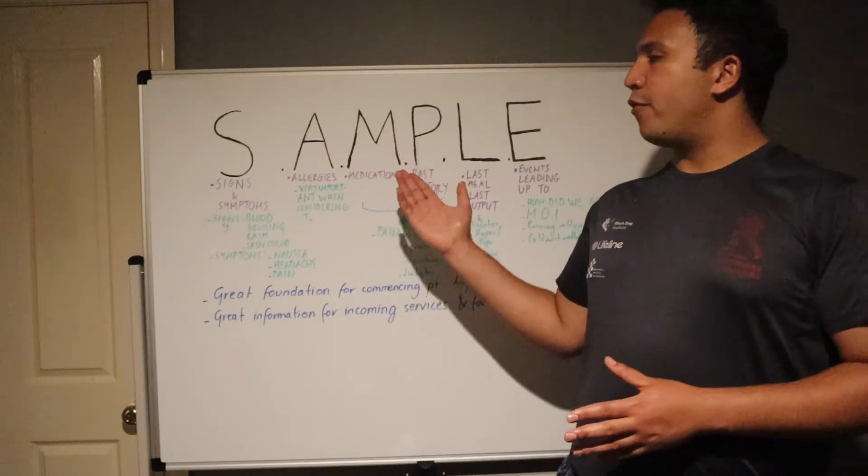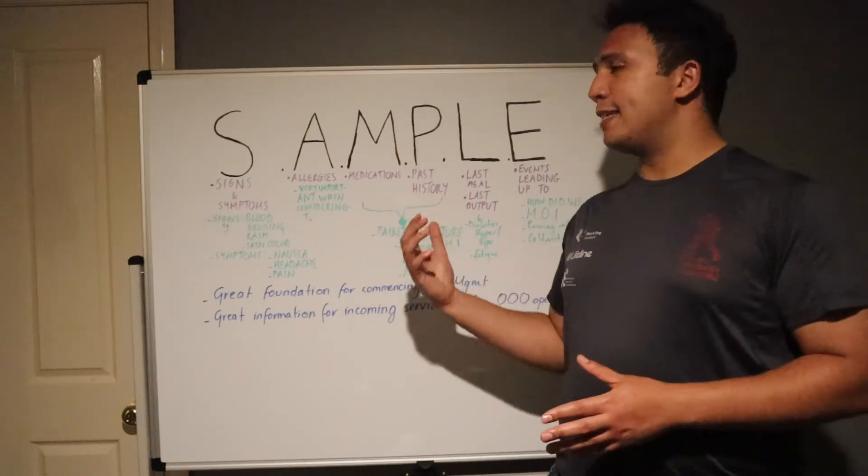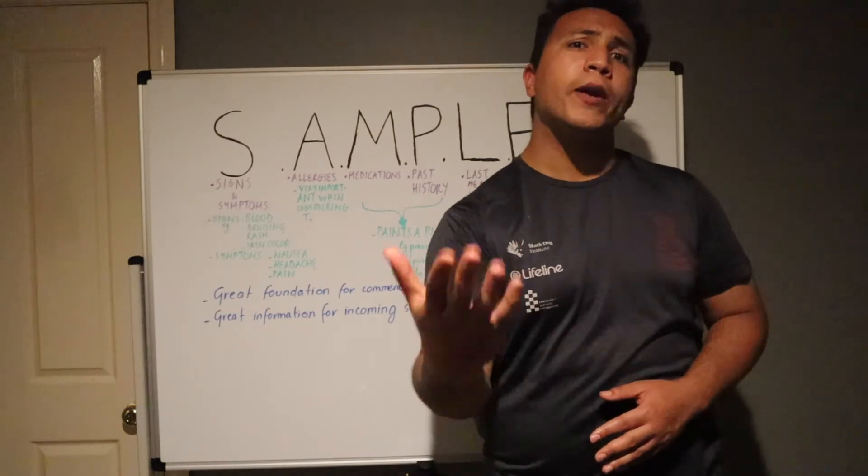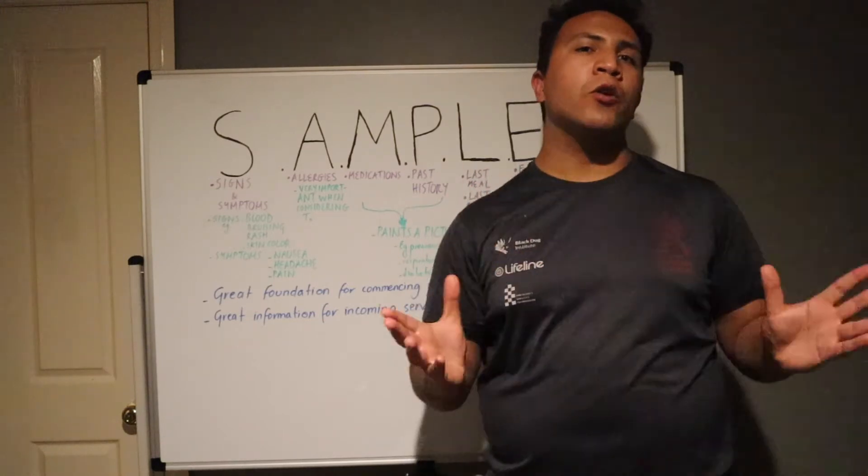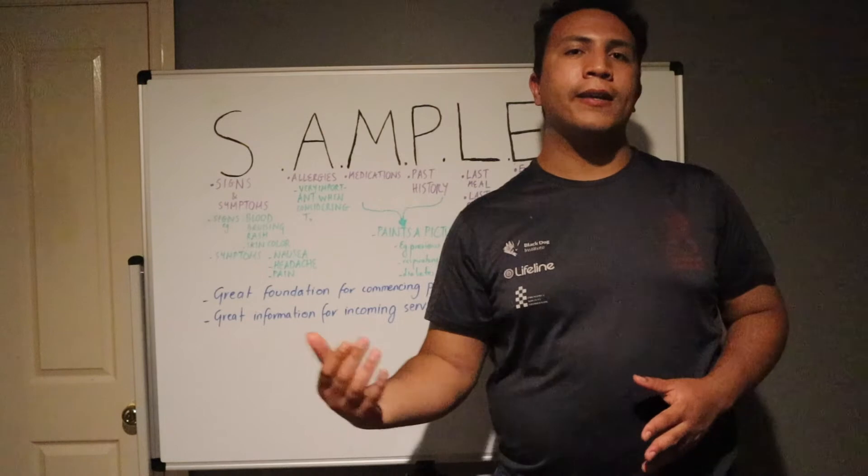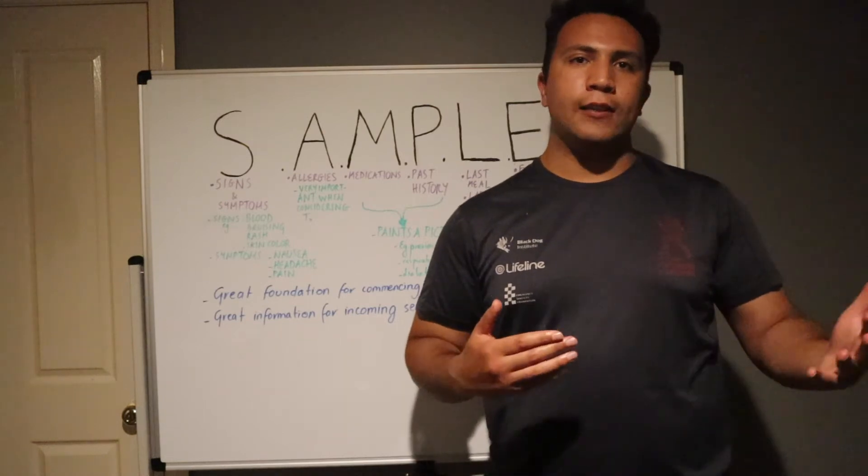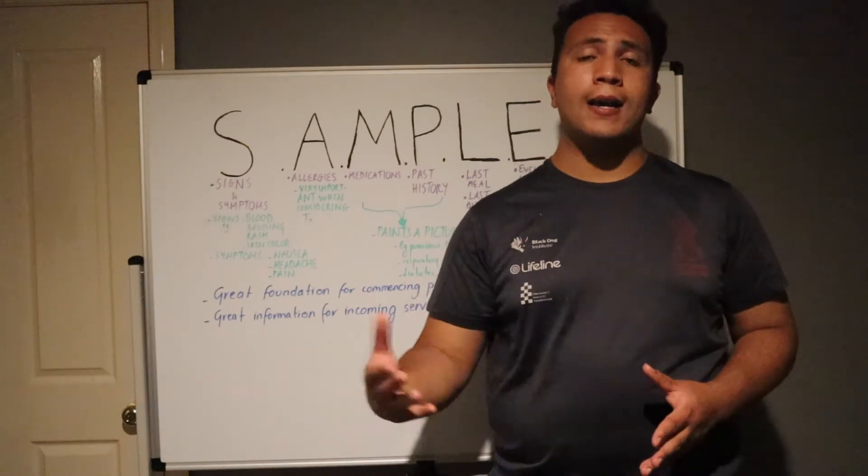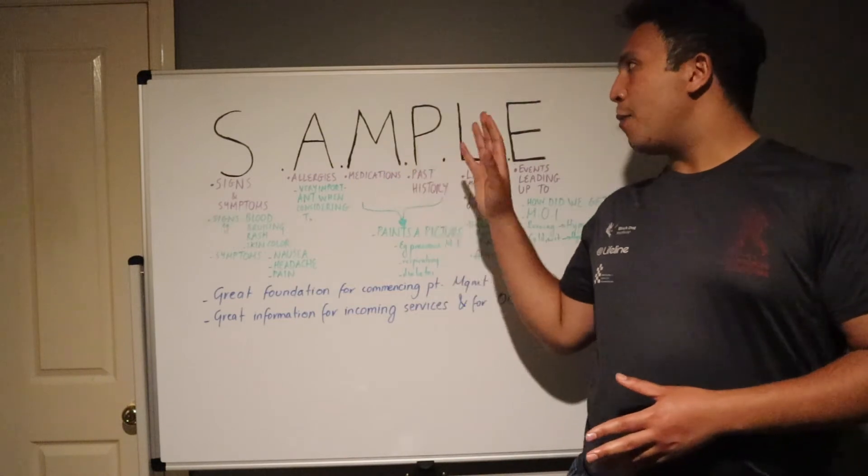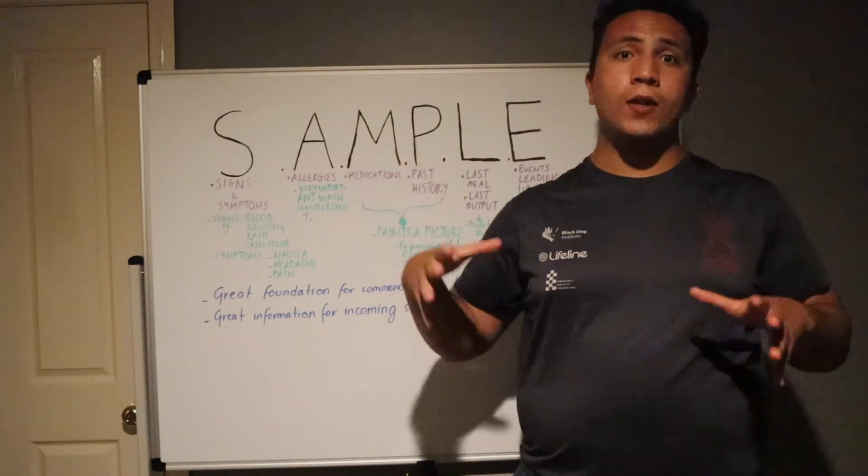You then look at M for medications and P for past history. Paint a really good picture for yourself. Know what's going on with the patient. Are they diabetic? Do they have any respiratory conditions? Have they had a heart attack in the past? Could their past history be directly related to what's going on right now?